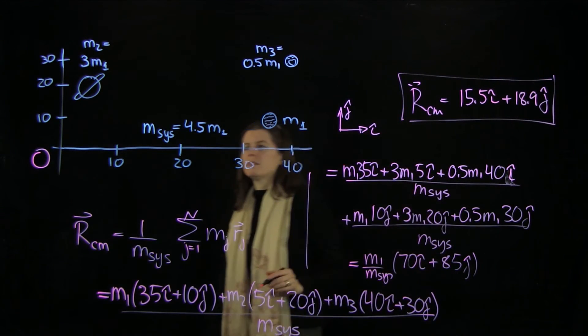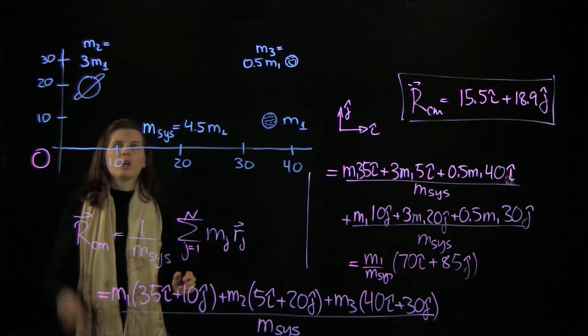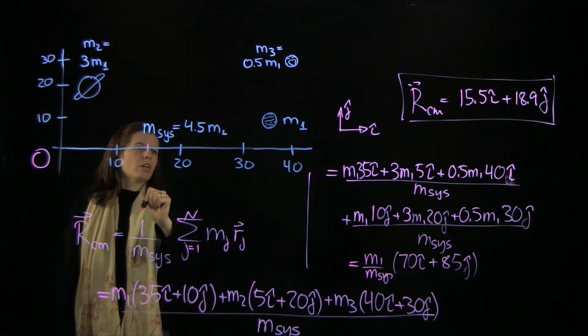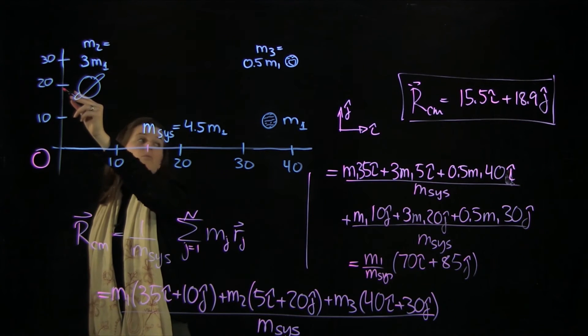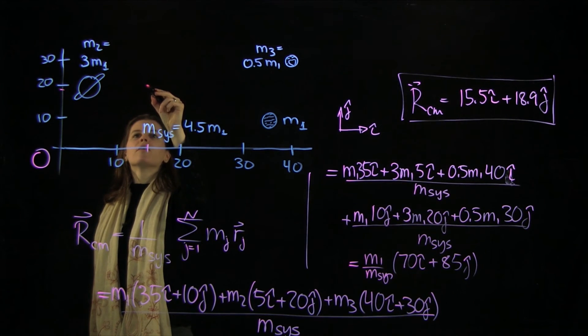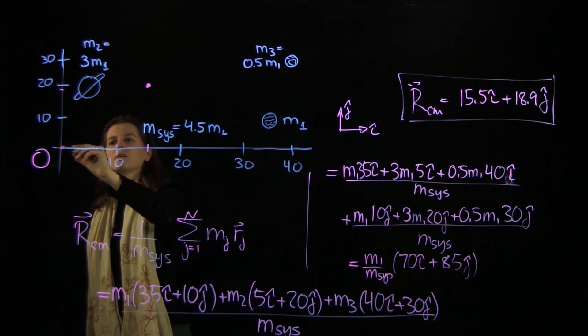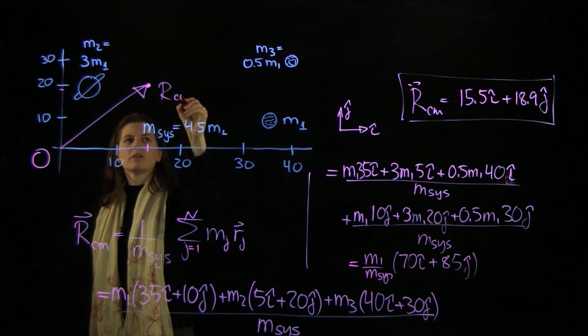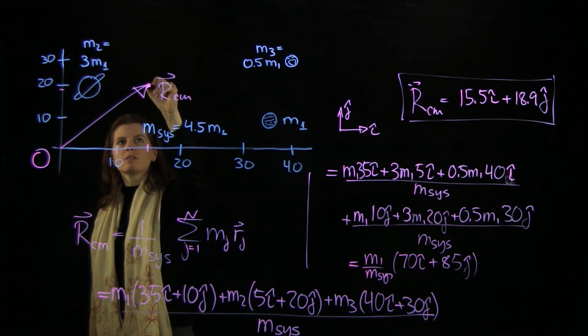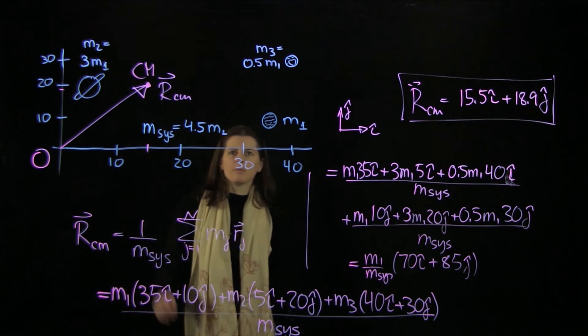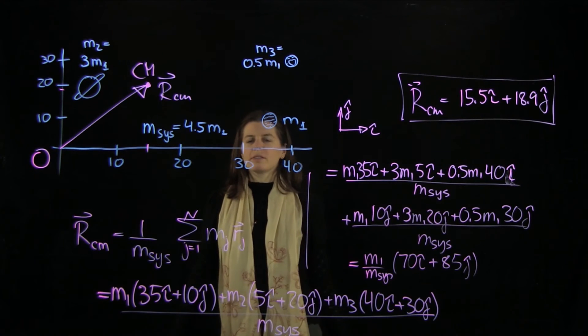All right, so let's see where this fits on our graph here. 15 in the i-hat is somewhere here, and 19 is almost 20, so it's going to be here, about there. So this is my rcm, and this here is my center of mass of the system of these three little planets.